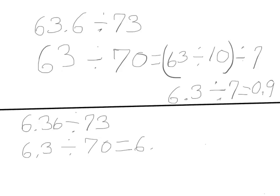I'm going to divide by 10 first, and then I'll divide that by 7. 6 and 3 tenths divided by 10 is 63 hundredths. I'm going to divide 63 hundredths by 7.